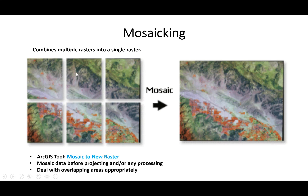Mosaicing is combining multiple rasters into a single raster. As shown on these slides, we have six tiles that are combined into one large single dataset. The tool used in ArcGIS is Mosaic to New Raster. It is good practice to first mosaic all datasets into one before doing any processing. Multiple tiles may overlap, and ArcGIS provides options to handle overlapping areas — you can take the average of values or pick which raster takes precedence.